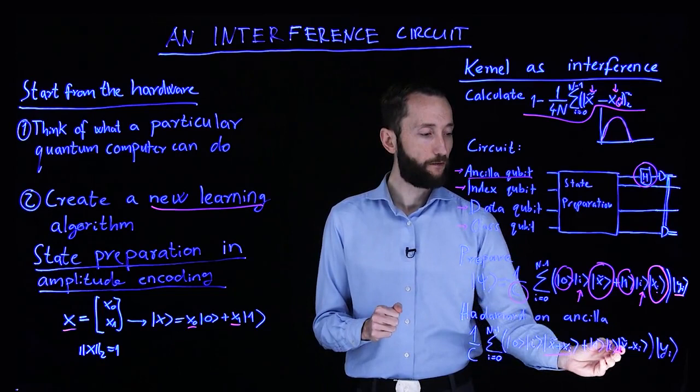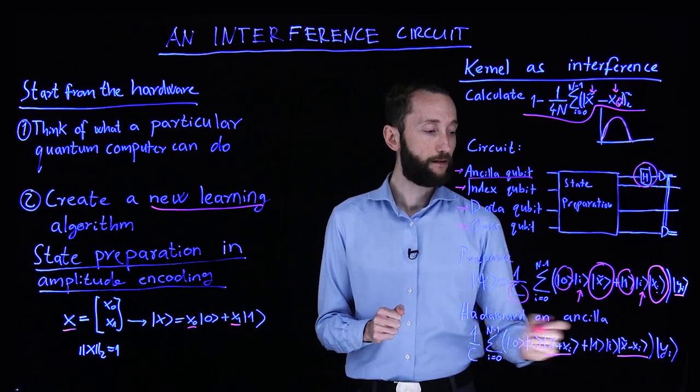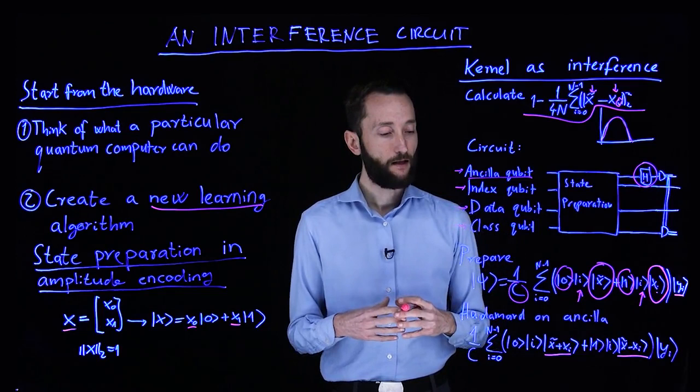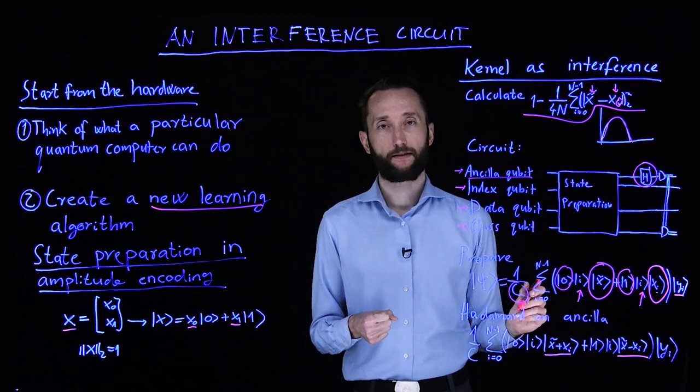You will have the test instance plus the data instance, and the test instance minus the data instances included in these vectors. So that's the interference part.